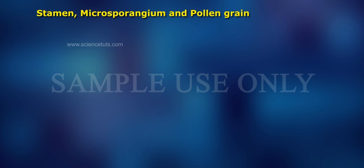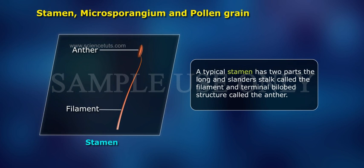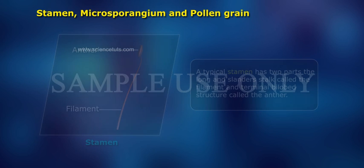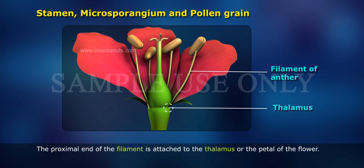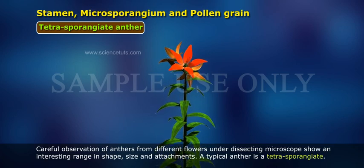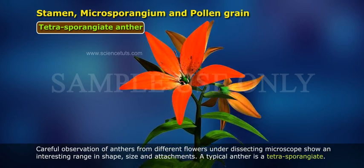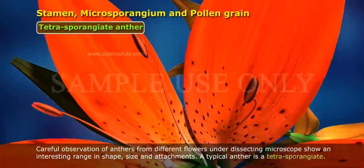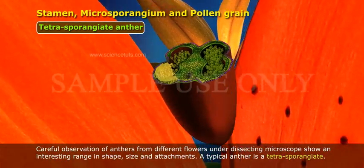Stamen, Microsporangium and Pollen Grain. A typical stamen has two parts: the long and slender stalk called the filament, and the terminal bilobed structure called the anther. The proximal end of the filament is attached to the thalamus or the petal of the flower. Careful observation of anthers from different flowers under a dissecting microscope shows an interesting range in shape,